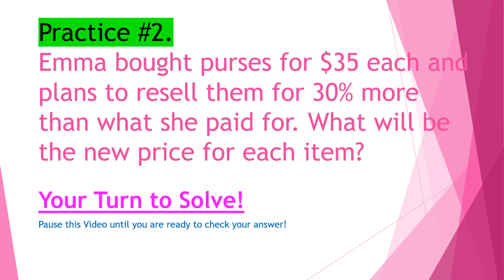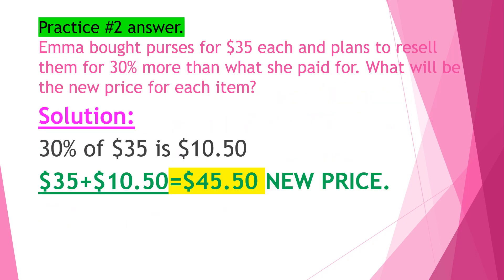Practice number two: Emma bought purses for $35 each and plans to resell them for 30% more than what she paid for. What will be the new price for each item? Now it's your turn to solve — pause this video until you are ready to check your answer. Solution: 30% of 35 is 10.50, that is when you multiply 35 times 0.30. So 35 plus 10.50 is equal to $45.50, which would be the new price for the purse.